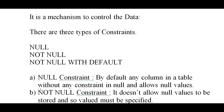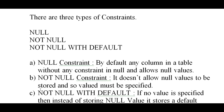Not null constraint: it doesn't allow null values to be stored, and so a value must be specified. It is quite opposite to a null constraint — it doesn't allow any null values to be stored, and so a value must be specified.